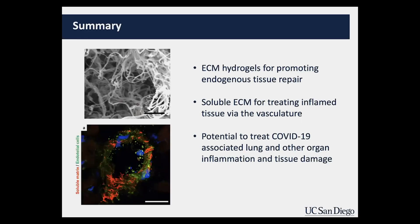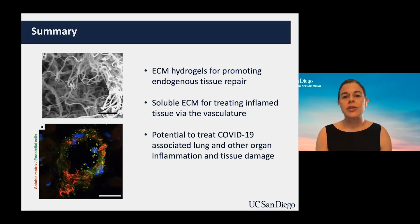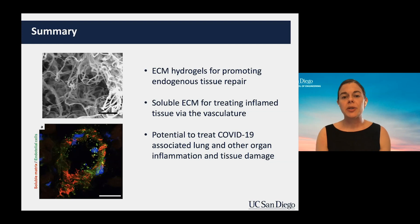To briefly summarize: extracellular matrix hydrogels are a great technology for promoting endogenous — the body's own — tissue repair. We now have this new soluble extracellular matrix form that can treat inflamed tissue via the vasculature through a simple intravenous injection, making it very minimally invasive. Based on results showing immunomodulatory properties and stem cell recruitment, we believe this has significant potential to treat the overactive lung inflammation and other organ damage related to COVID-19.